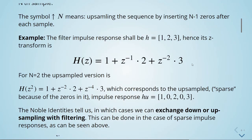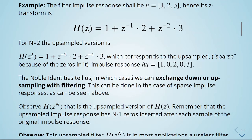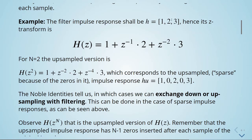The Noble identity tells us in which cases we can exchange downsampling or upsampling with filtering. This can be done in the case of a sparse impulse response, as seen above. Note that h(z^n) is the upsampled version of h(z), where the upsampled impulse response has n minus one zeros inserted after each sample of the original impulse response.